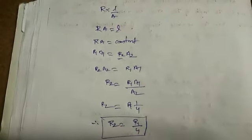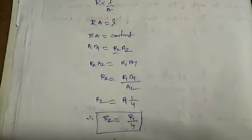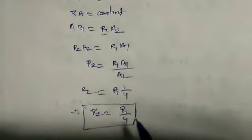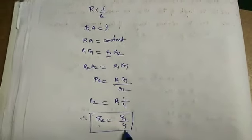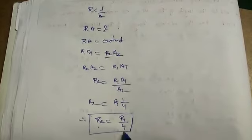Therefore R2 equals R1 divided by A2 times A1, and since A1 by A2 equals 1 by 4, R2 equals R1 divided by 4. When the diameter is doubled, the resistance becomes one-quarter of the original resistance. So the resistance R2 is R1 by 4, meaning the resistance is 1 by 4 times the original resistance.